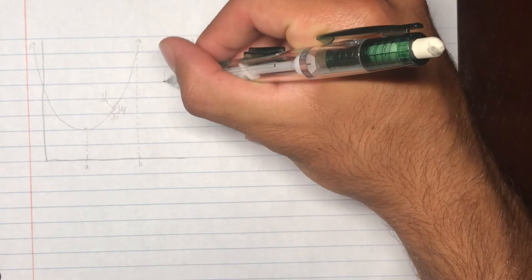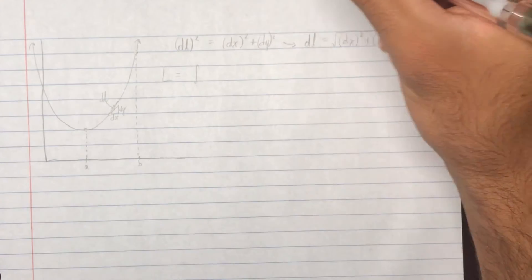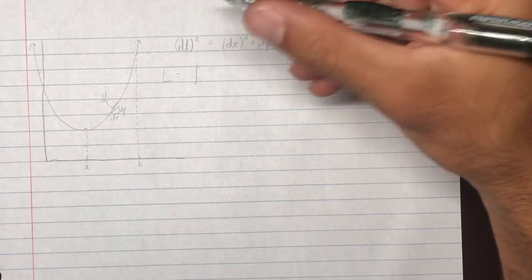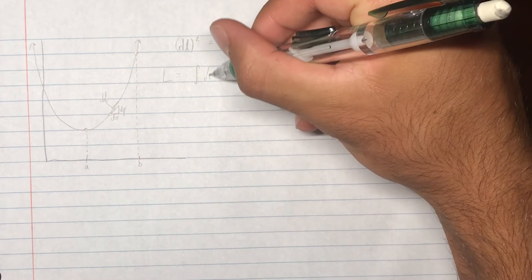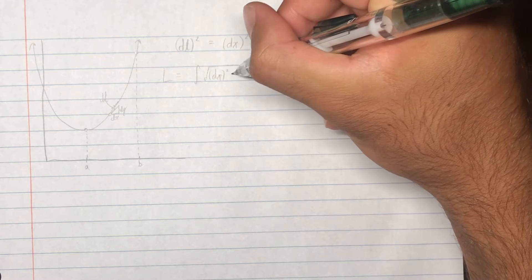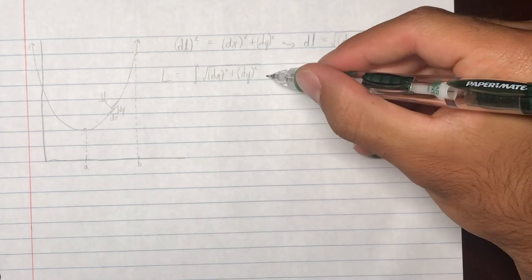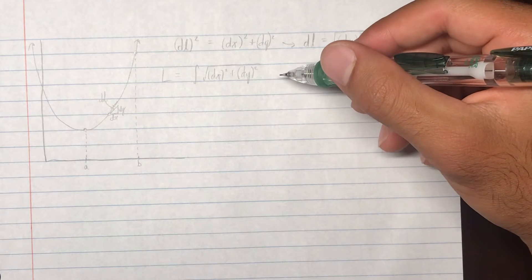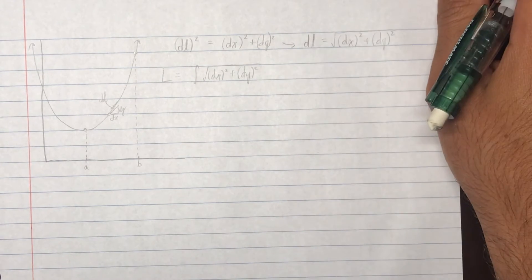So, the length equals integral of dL, which is square root of dx squared plus dy squared. Notice I haven't put a dx after the integrand, like we usually do. Because, well, that will just come in a later step, you'll see.